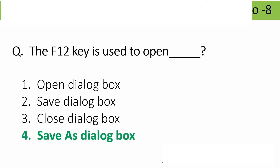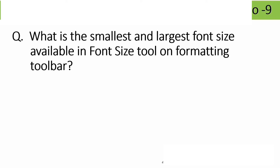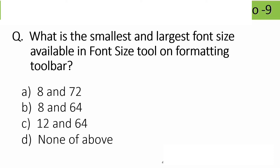What is the smallest and largest font size available in the font size tool on the formatting toolbar? Options: 8 to 72, 8 to 64, 12 to 64, all of the above. The correct answer is option A: 8 and 72 — smallest is 8, largest is 72.